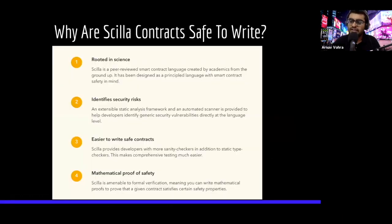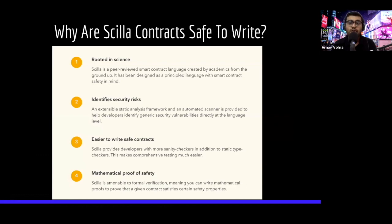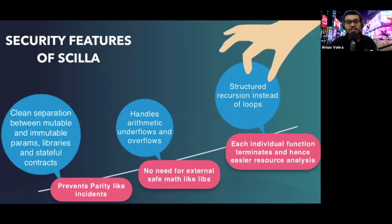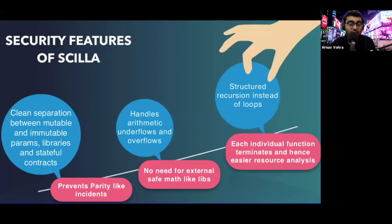Why are Scylla contracts safe to write? Scylla is peer-reviewed, it identifies security risks, and it is easier to write safe contracts. You can mathematically verify the security of your contracts using formal verification. Scylla also automatically handles arithmetic underflows and overflows. And since it's a functional programming language, there's structured recursion instead of loops, which makes formal verification easier and your code more readable.